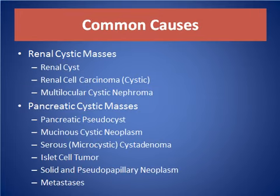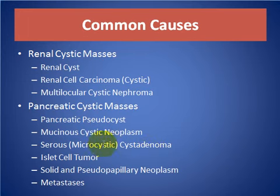The common causes of retroperitoneal cystic mass lesion include renal cystic mass — renal cyst, renal cystic tumor, and multilocular cystic nephroma — and pancreatic cystic masses like pancreatic pseudocyst, mucinous cystic neoplasm, serous microcystic cystadenoma, islet cell tumor, solid and pseudopapillary neoplasm, and metastasis.